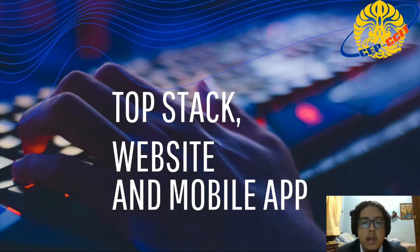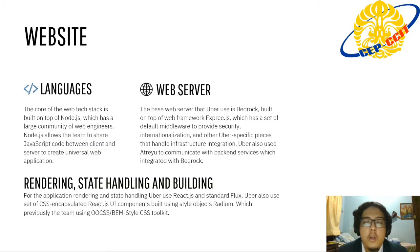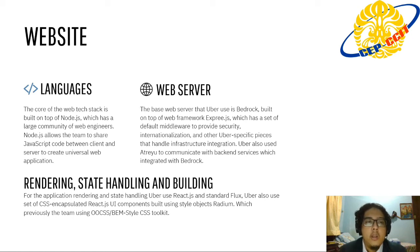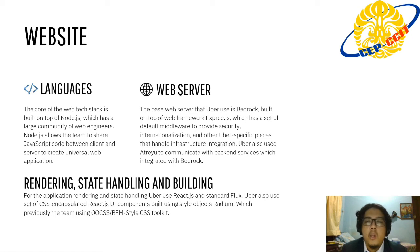For the website and top stack, Uber creates the website on top of Node.js, which has a large community in web engineering. Using Node.js, Uber can share JavaScript code between the client and server to create a universal website. The web server is built on top of Bedrock, which is built on top of Express.js and has a set of middleware providing security. Uber also specifies pieces that handle infrastructure integration.